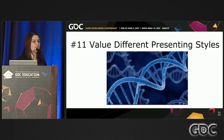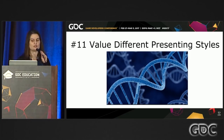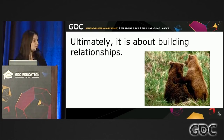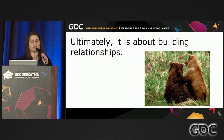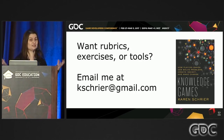Number 11: even though you may have standards, rubrics, and requirements, value different styles and perspectives. There are certain things you want — good eye contact, telling stories, making people care, connecting with the audience, clear articulate ideas, positive attitude and enthusiasm. But also value different ways of presenting and be accepting and open, because that builds trust with your students, making them more comfortable and confident. Ultimately it's about building relationships — with your audience and your students. Want to hear more? Email me for rubrics, exercises, and tools.